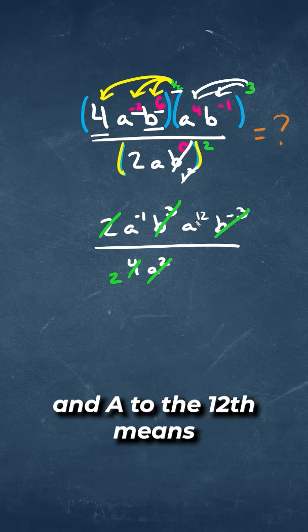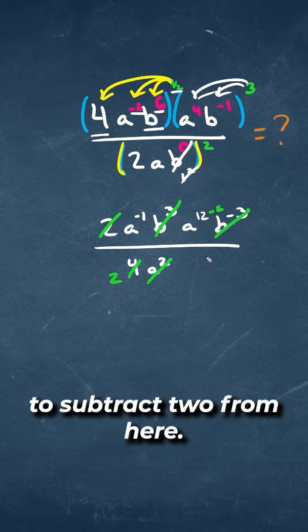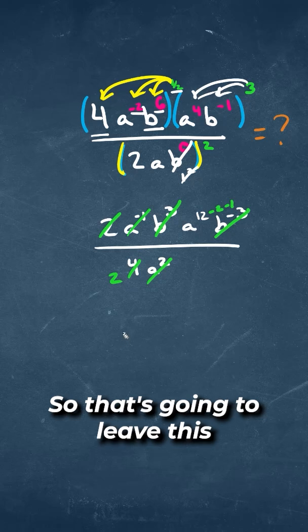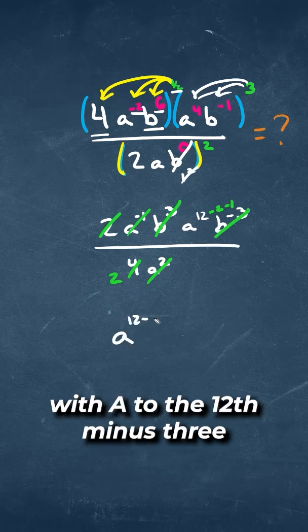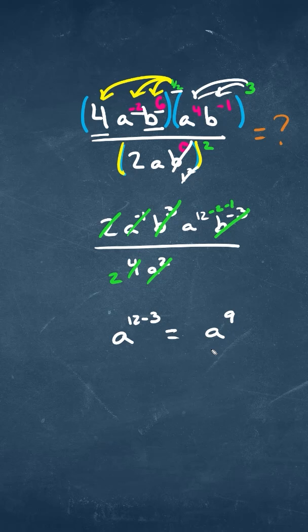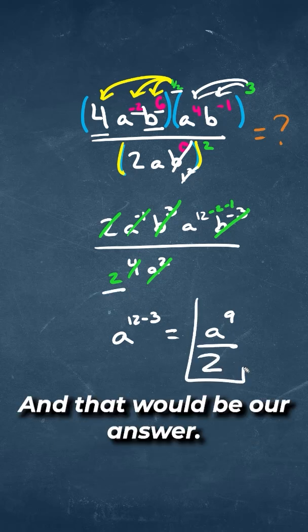A squared and A to the 12th means that we're going to subtract 2 from here. And we have another A we're going to subtract to another one right there. So that's going to leave us with A to the 12th minus 3, which is equal to A to the 9th all over this 2. And that would be our answer.